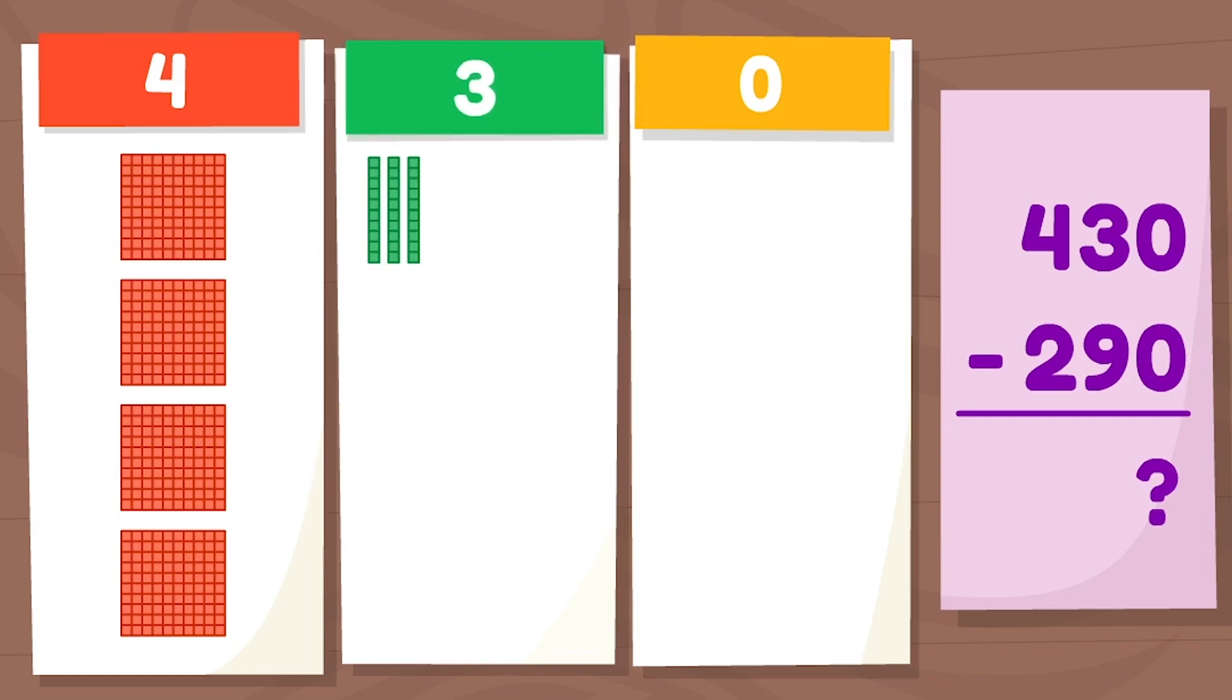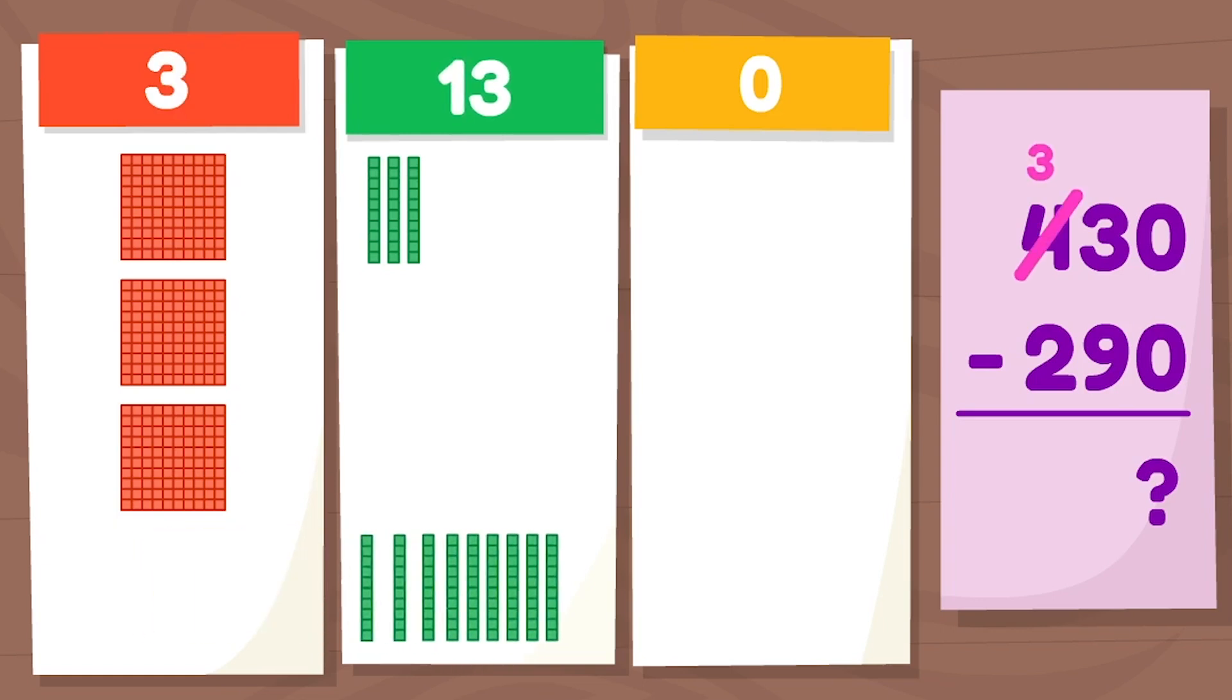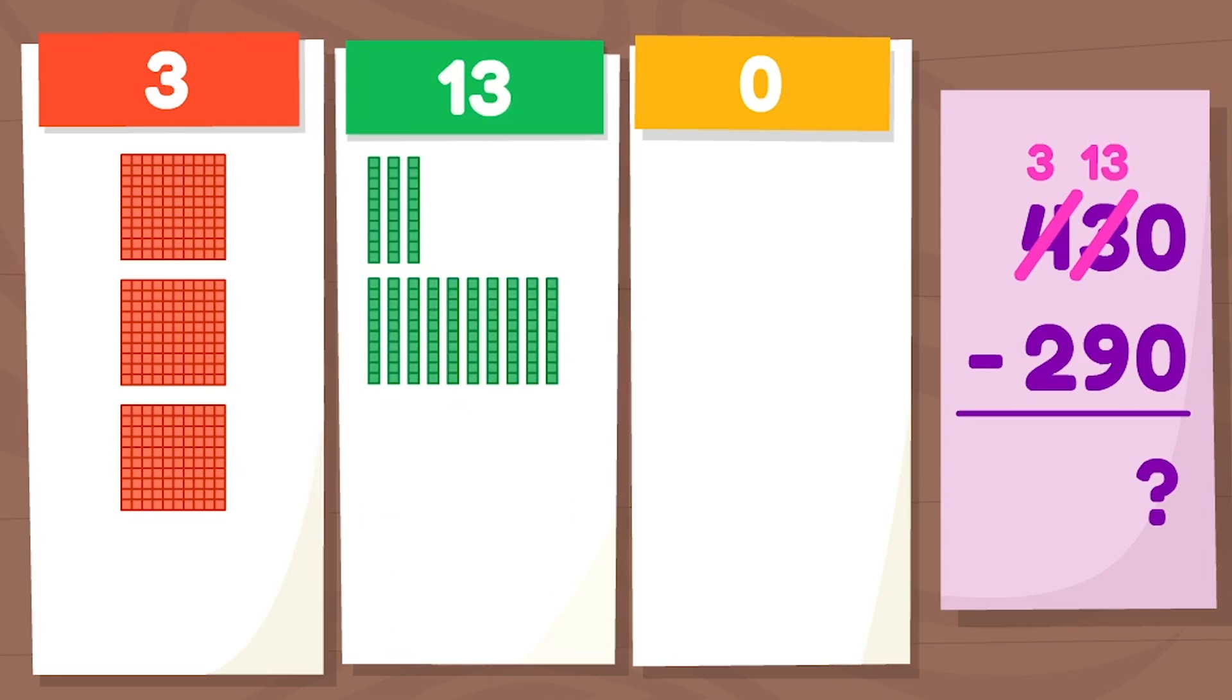There are nine tens in 290. Whoops, we don't have enough rods to take away nine. Let's change a flat into 10 rods because 100 equals 10 sets of 10. Now we can take away nine rods.